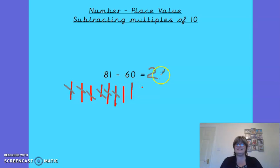So I have two tens left. And my ones stay the same. So 81, take away 60, which sounds like a number sentence we'd never be able to do, leaves us with 21, just because we use the deans to help us out.